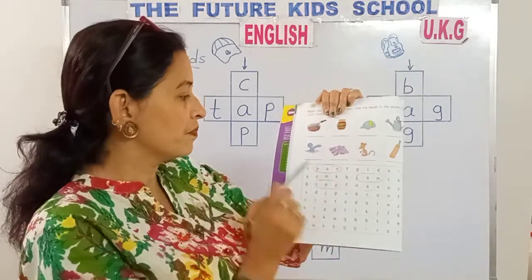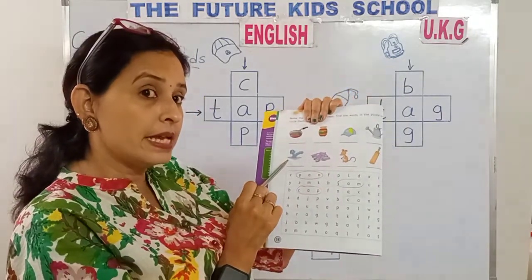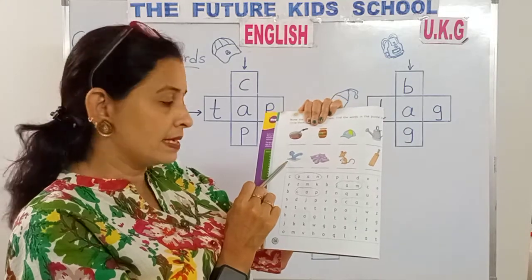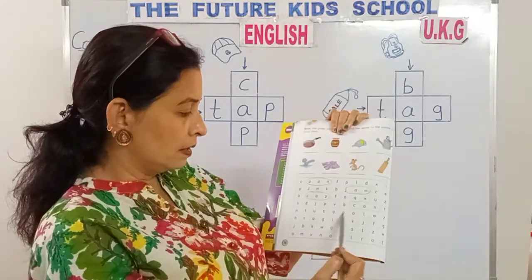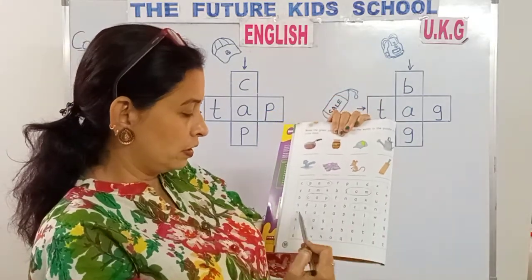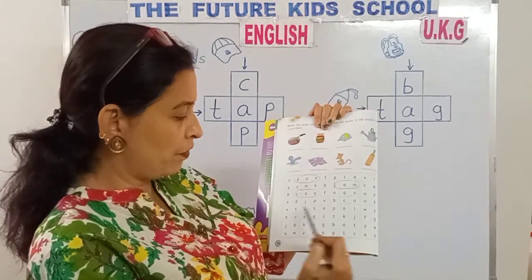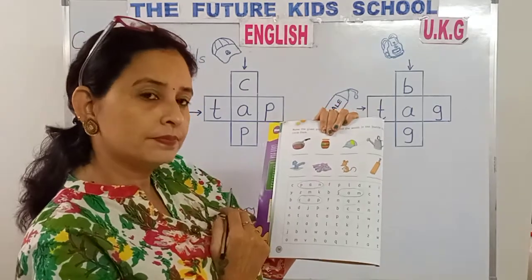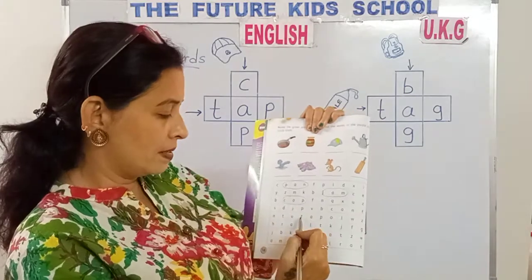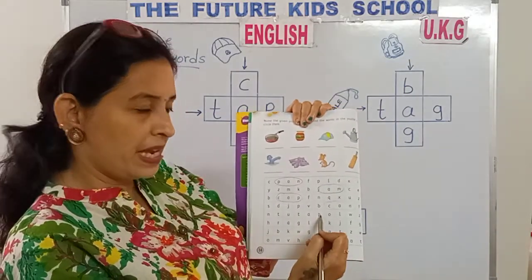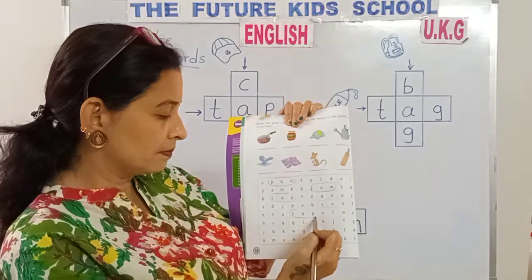Lovely. This is a tap. T-A-P. Tap. Now look in these puzzled letters, children — can you show me the word tap over here? The spelling. Yes. T-A-P. Tap. Circle it.